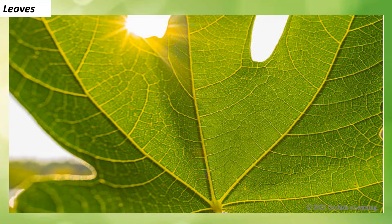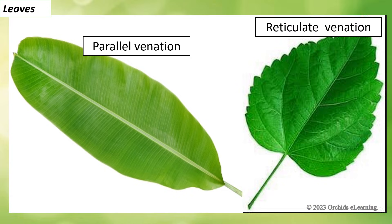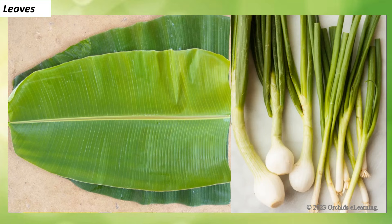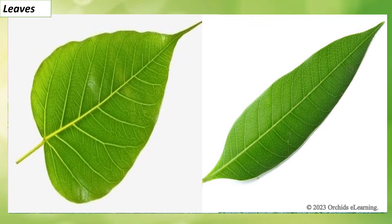The arrangement of veins in a leaf is termed venation. Venation is of two types: parallel and reticulate. If the veins run parallel to one another from the base to the tip of the leaf, the leaf is said to have parallel venation — example: banana and onion. If the veins are arranged in a net-like pattern on both sides of the midrib, the leaf is said to have reticulate venation — example: peepal and mango.